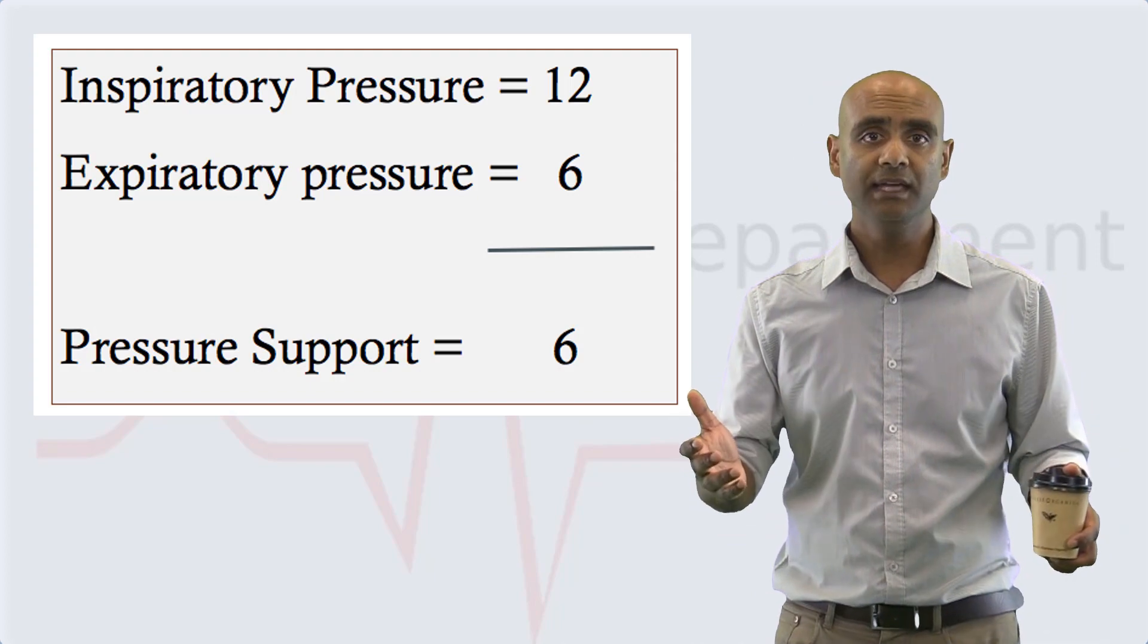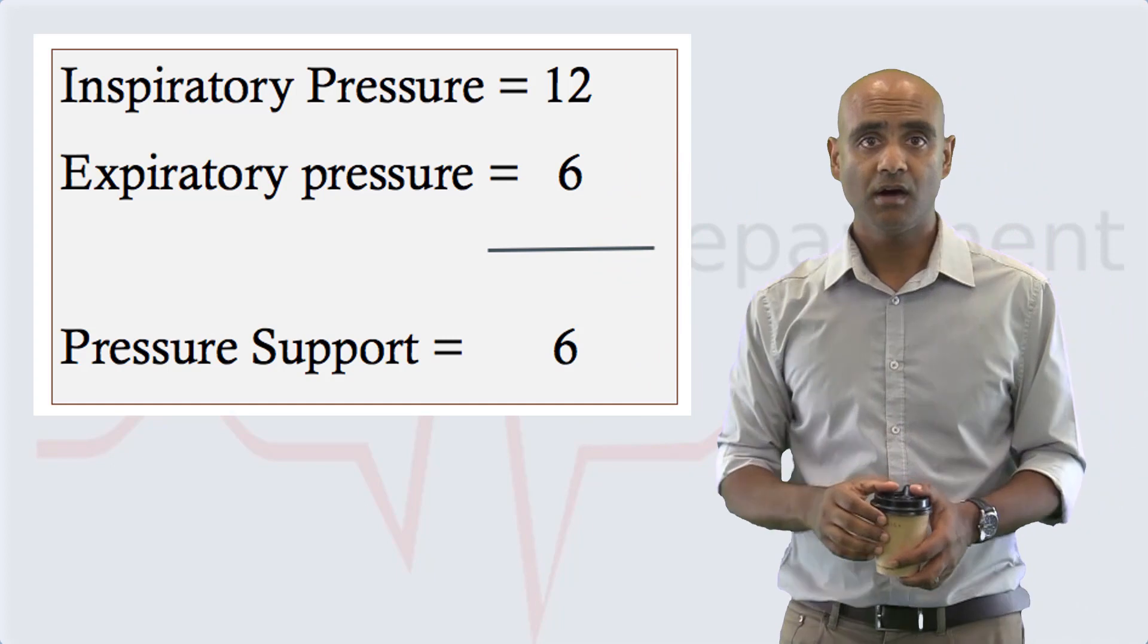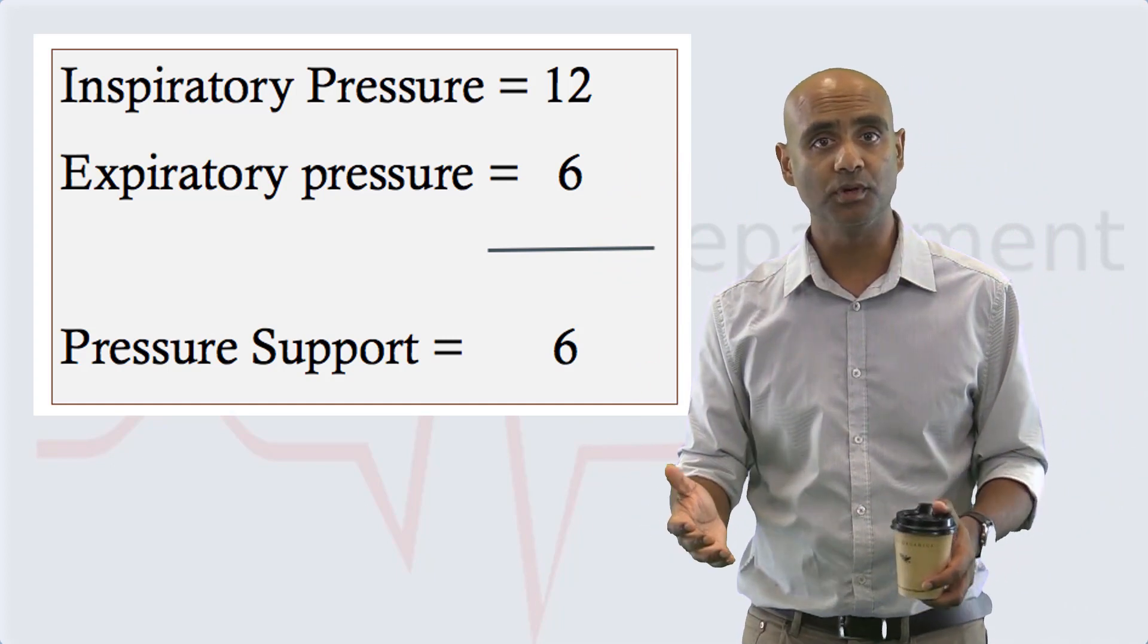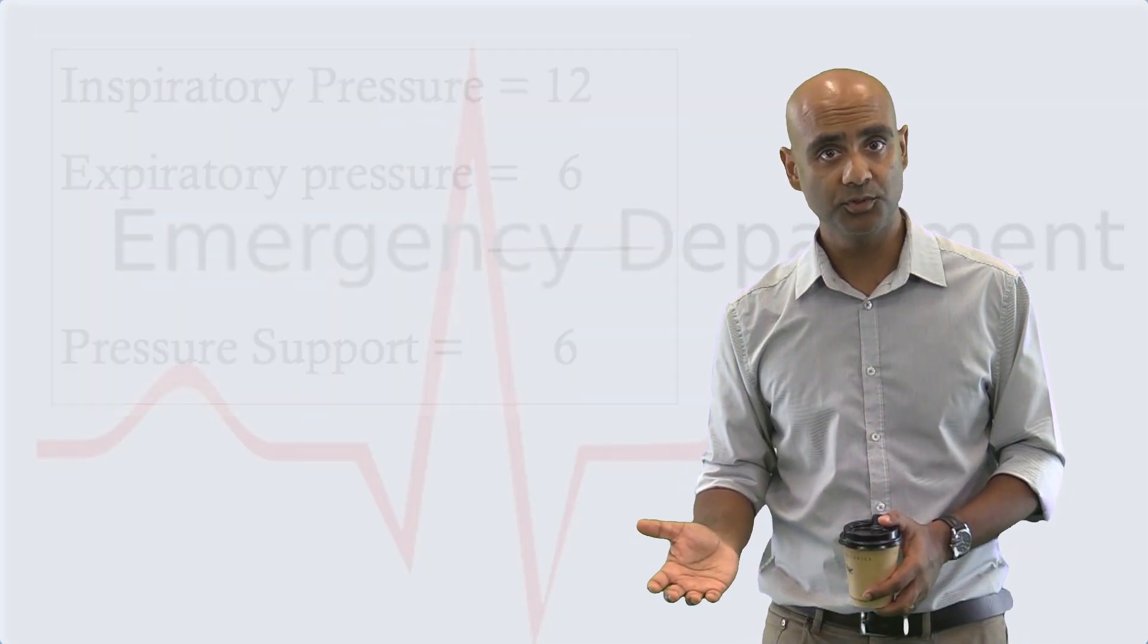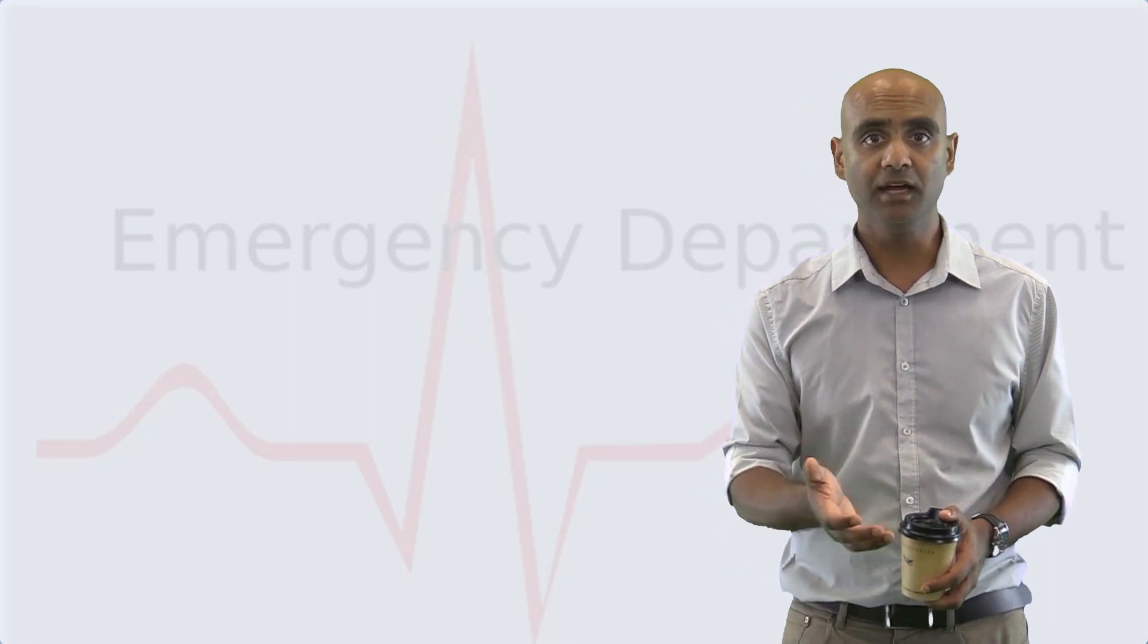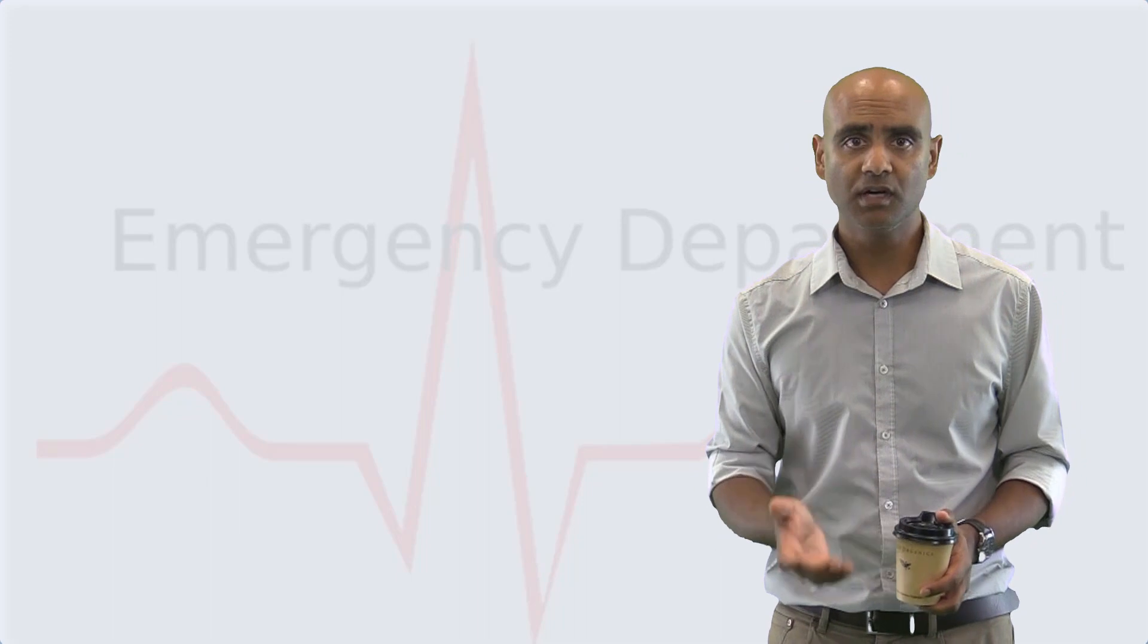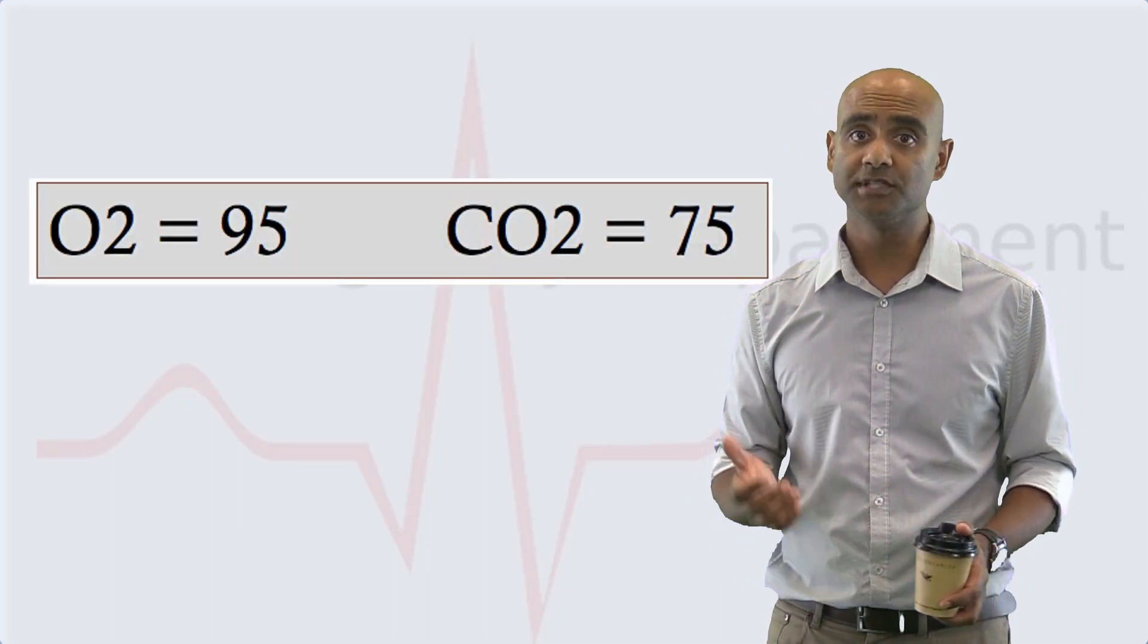So now he has an inspiratory pressure of 12 and an expiratory pressure of 6, giving him a pressure support of 6 centimetres of water. His O2 sats improve, and his work of breathing decreases initially, but after an hour or so, he looks like he's tiring. Although he's no longer hypoxic, a repeat arterial blood gas shows a CO2 of 75.